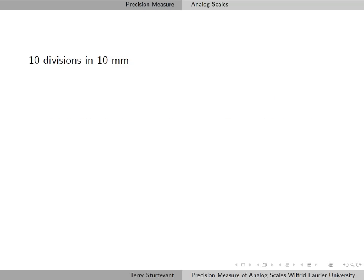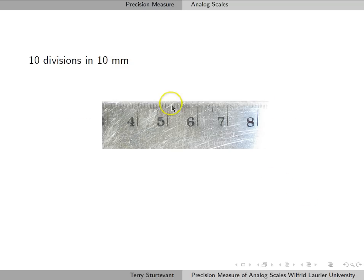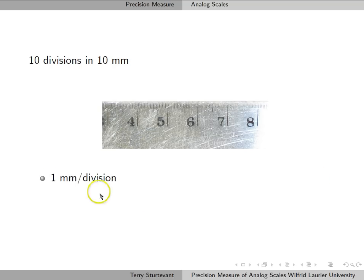Here we have a meter stick, where these are centimeters, and in this 1 centimeter there are 10 divisions, or 10 divisions in 10 millimeters. That means there is 1 millimeter per division, and so the precision measure is half of that space between the divisions, or half a millimeter.